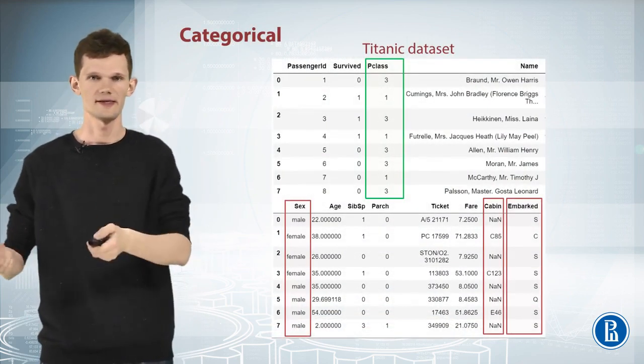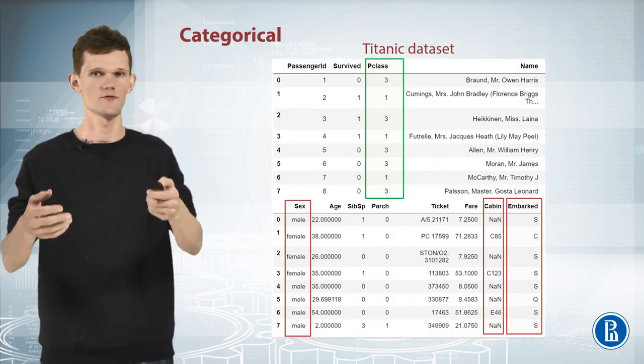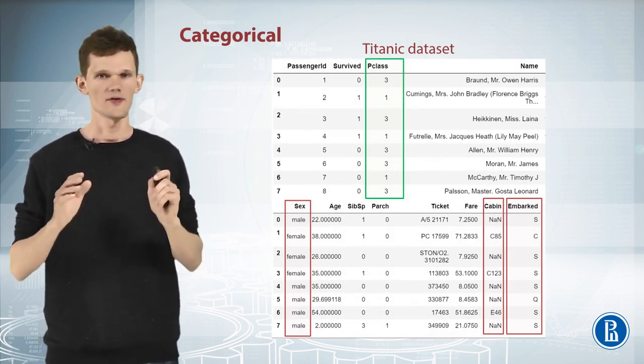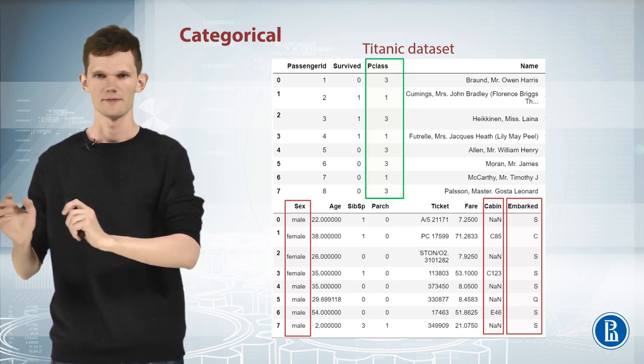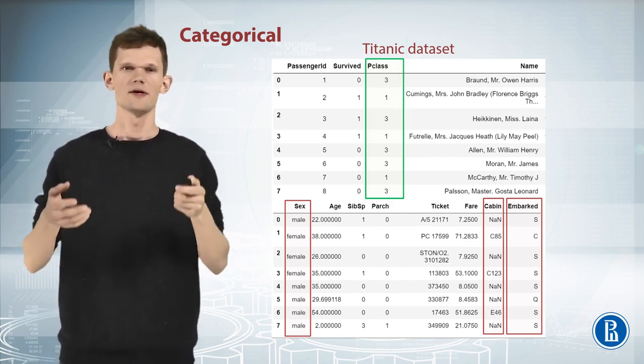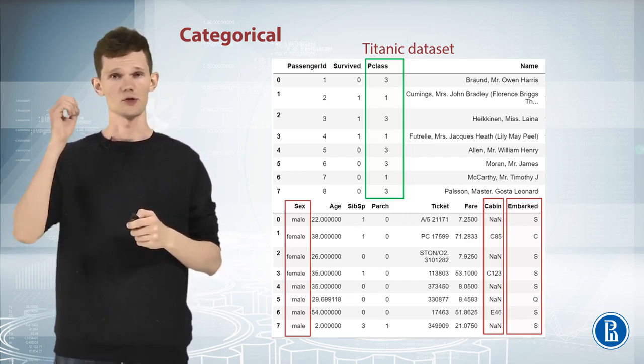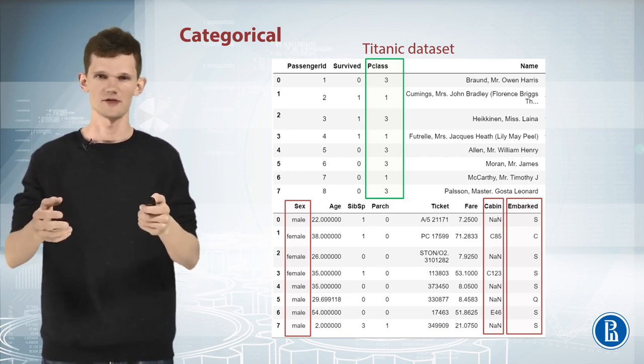First, let's look at several rows from the Titanic dataset and find categorical features here. Their names are Sex, Cabin and Embarked. These are usual categorical features, but there is one more special, the P-Class feature.